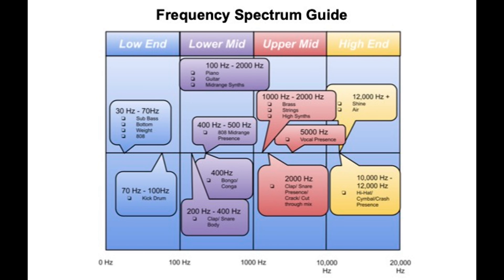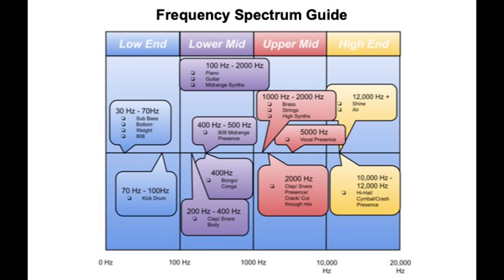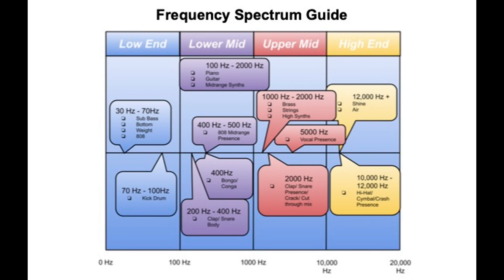We tend to look at the frequency spectrum in four different ranges. Our lows are our subs, our 808, our bass, and our bottom. The kick drum is going to sit around 70 to 90 hertz — that's where we get our big kick drum hit. As we move up the frequency spectrum other instruments get introduced, and then we have our vocals around 5k — that's where we get vocal presence. Above all that on the top end we have our shine, our air, our hi-hats, and symbols.